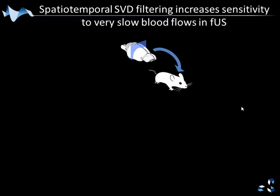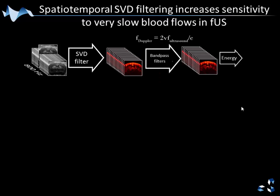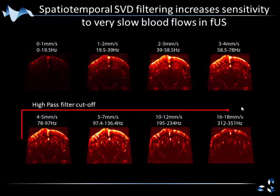This has huge implications for functional imaging. Taking the rat brain with an ultra-fast Doppler recording, filtering with the SVD filter, and selecting different speed bands with a band-pass filter, I can collect energy for blood flow speeds as low as 1 millimeter per second. That would not have been possible with a high-pass filter, because to eliminate the tissue I would have to set the cutoff frequency at least at 60 or 70 Hz, losing everything below that. This is critical because we want to detect slow blood flow in arterioles and venules where neurovascular coupling occurs.